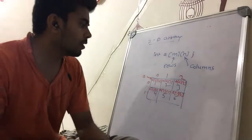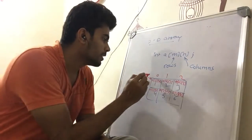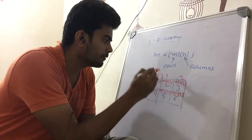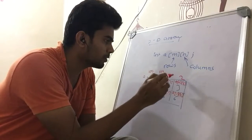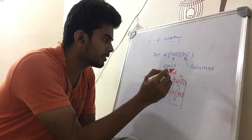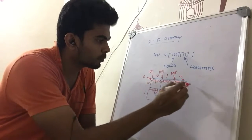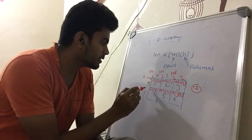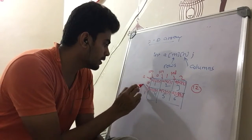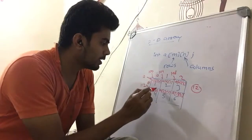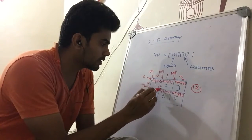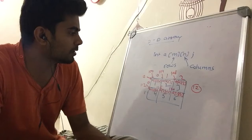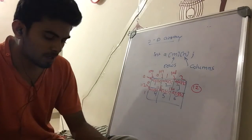Since all the elements are integers, if the base address is 100, then the next element will be at 104, then 108 — because each integer is 4 bytes, so 12 bytes are consumed by the first row. The next row starts at 112, then 116, then 120. This is how addressing is done.